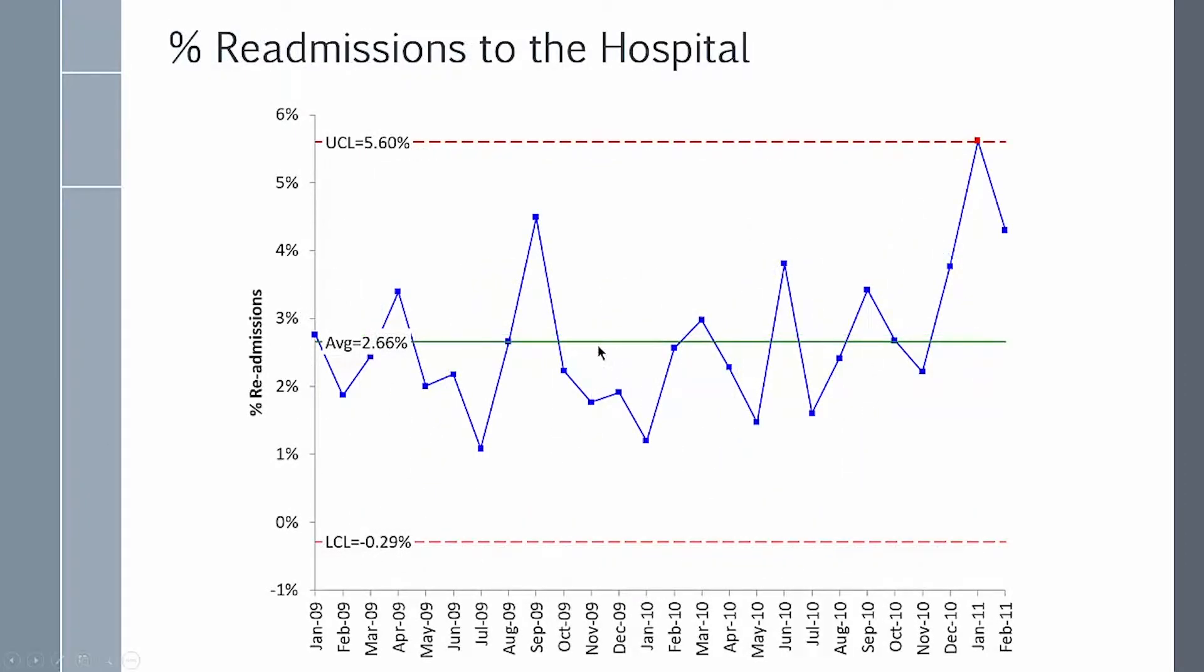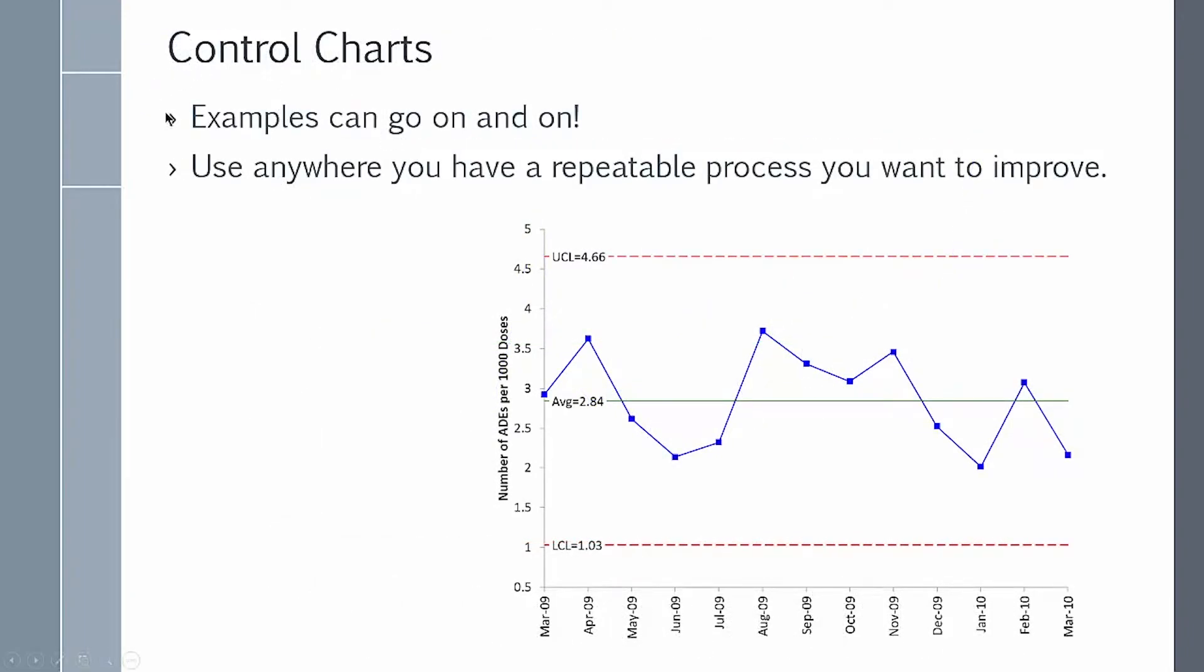And of course, you can use control charts in healthcare. Here's a percent of re-admissions to a hospital. They're running about 2.66% re-admission on a monthly basis. One month, they had one just above the upper control limit of 5.6%. So we could go on and on and on with the examples.